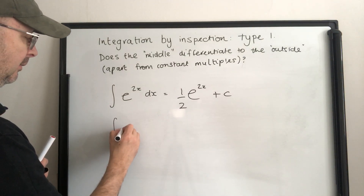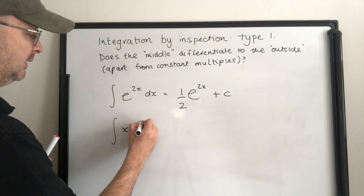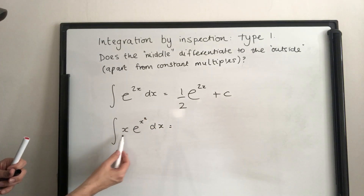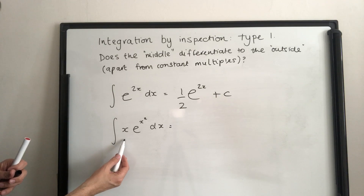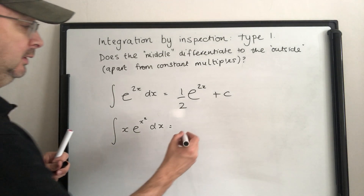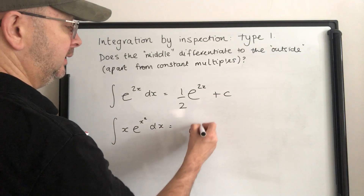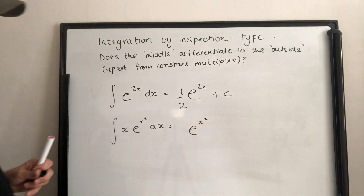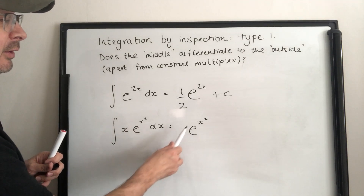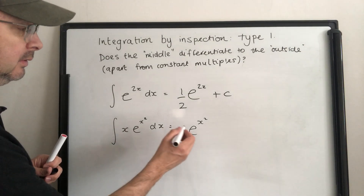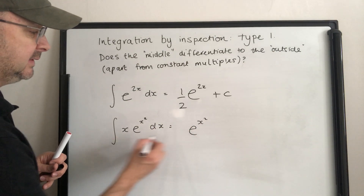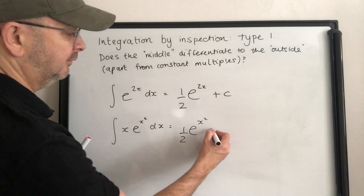If I have x times e to the x squared, does the middle differentiate to the outside? Yes — x squared differentiates to 2x, and apart from that 2 I can adjust. So that would be e to the x squared. That differentiates to 2x times e to the x squared. I only want x times e to the x squared, so I multiply by a half. Answer: one half e to the x squared, plus c.